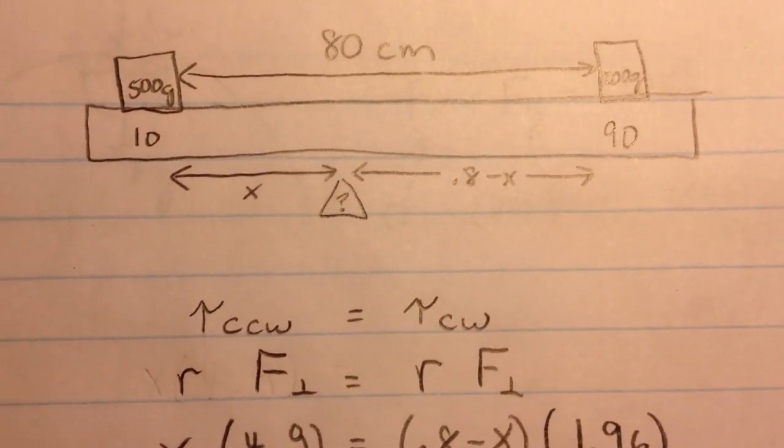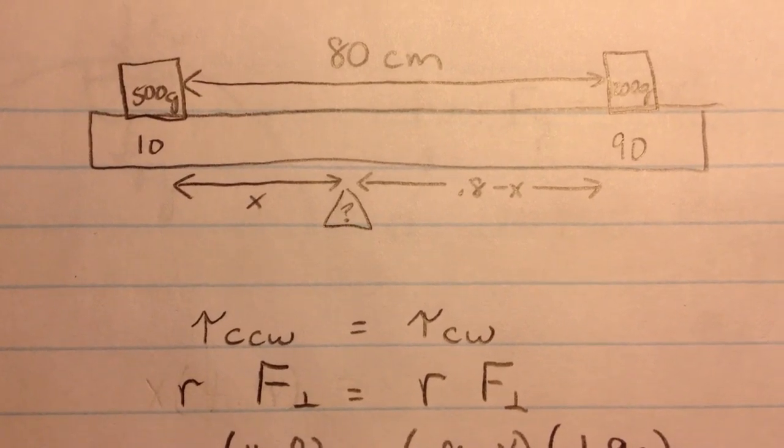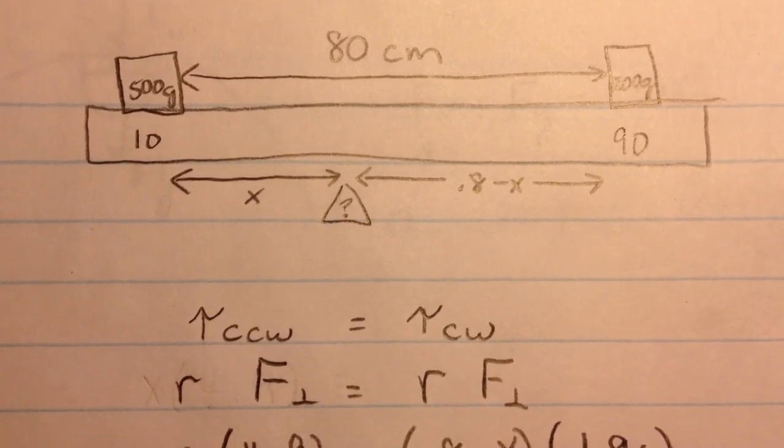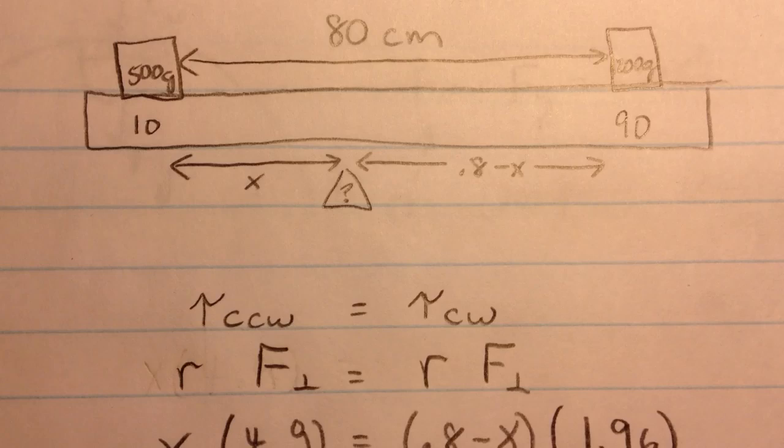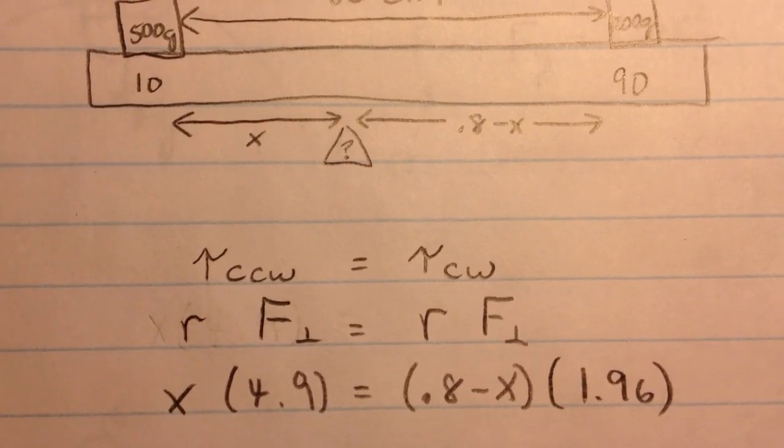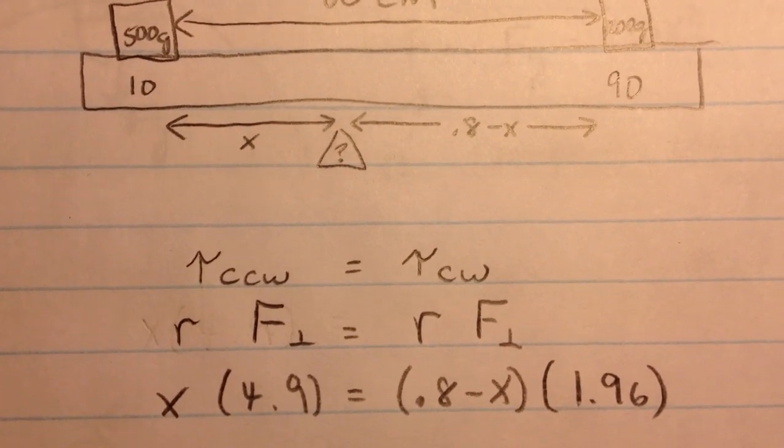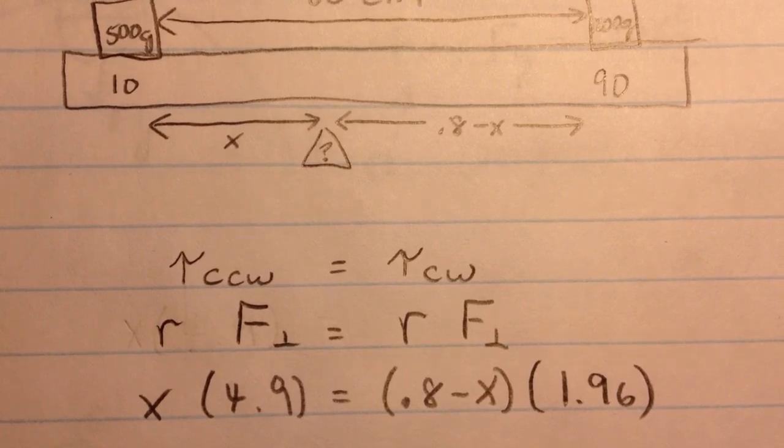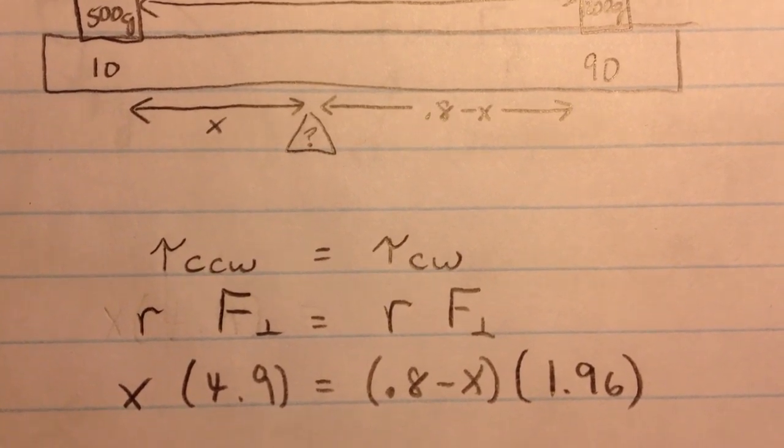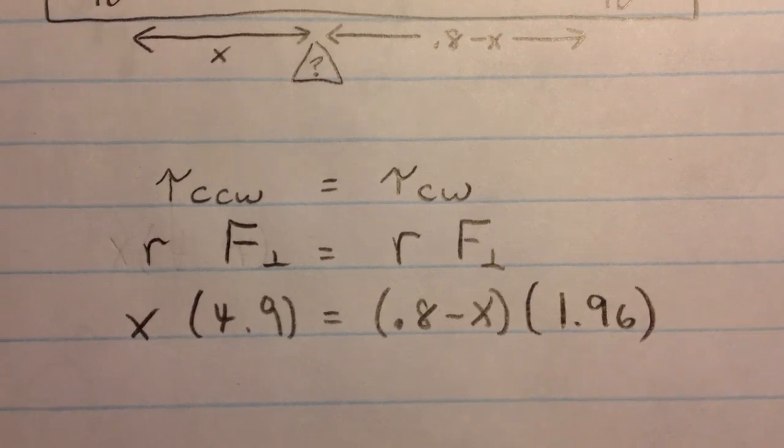We then set the torques equal to each other, so the torque from the 500 equals the torque from the 200. Torque is radius times force, so that would be X times 4.9 is equal to the quantity 0.8 minus X times 1.96. You solve that for X.